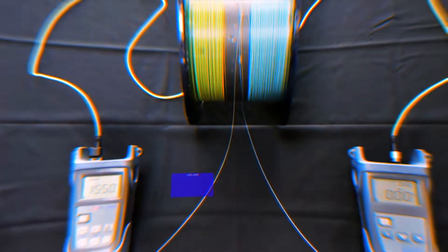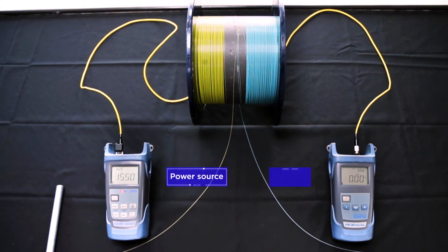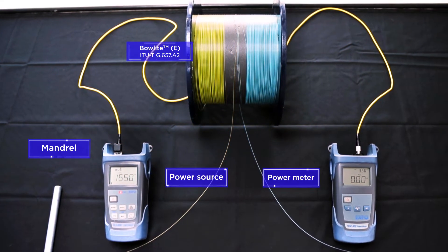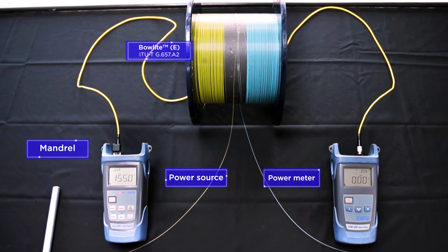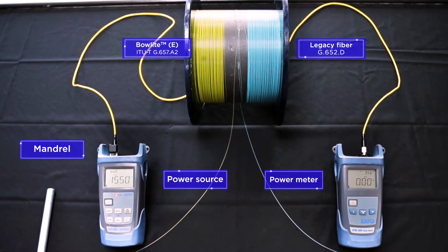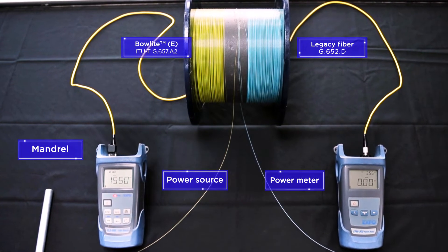Let us evaluate the impact of macro bending and potential loss reduction through a simple experiment on STL's bend-insensitive Bolite E fiber and traditional G652D fiber.